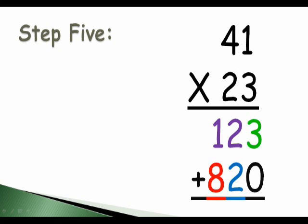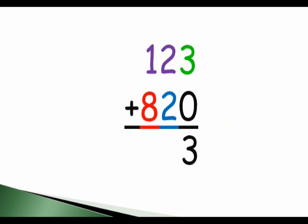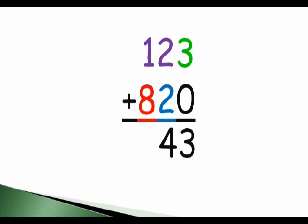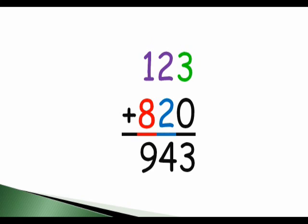So, in step five, we will get our final answer. 3 plus 0 is 3. 2 plus 2 is 4. 1 plus 8 is 9. So, our final answer is 943.